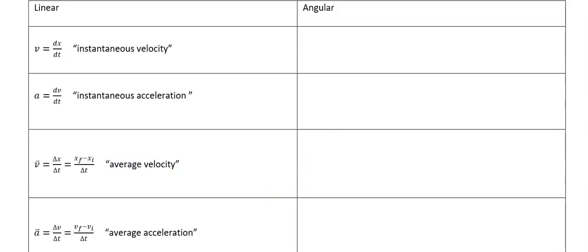What I went ahead and did is I made a little table for all the linear quantities that we've talked about all year. So we have linear instantaneous velocity, and that's the derivative of a position with respect to time. Same with linear acceleration. We have average velocity, average acceleration.